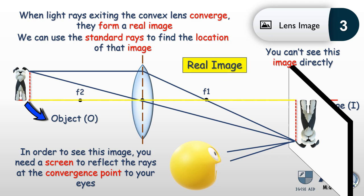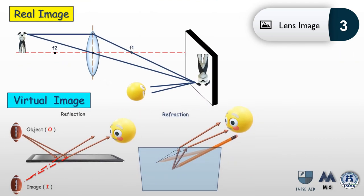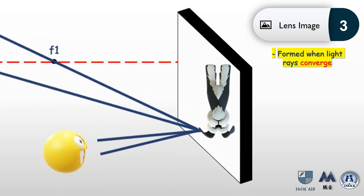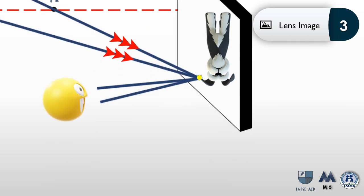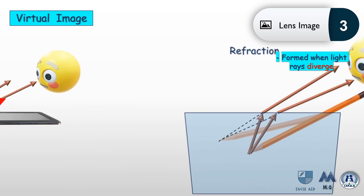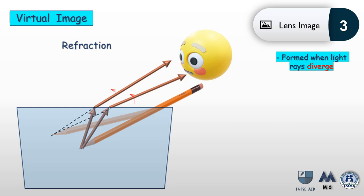Let's discuss the main differences between real and virtual images. A real image is formed whenever light rays converge, while a virtual image forms whenever light rays diverge. For a real image, rays converge at a point and you need a screen placed there. For a virtual image, the rays are actually diverging — they do not meet at a point — such as what you see in reflection or refraction, making it a virtual image.